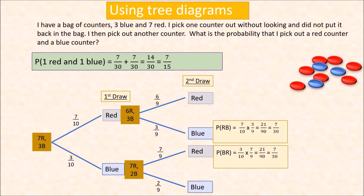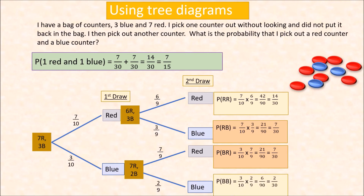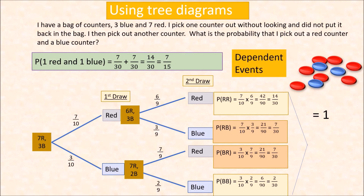We can also find other probabilities: red first then red is 7 over 10 times 6 over 9, which is 42 over 90 or 14 over 30. Blue then blue is 3 tenths times 2 over 9, which is 6 over 90 or 2 over 30. Notice that if you add all these probabilities, they equal 1. This is called dependent events because the second draw depends on the first draw — the probabilities on the second draw are not equal to the probabilities on the first draw.